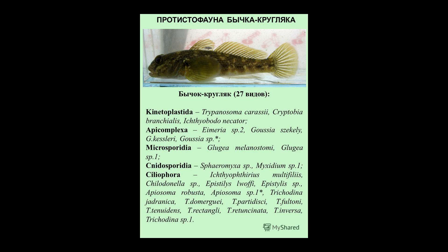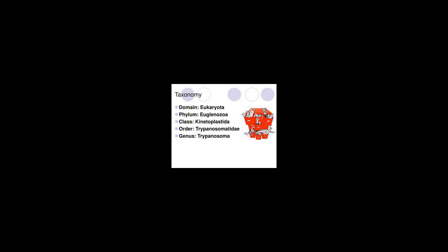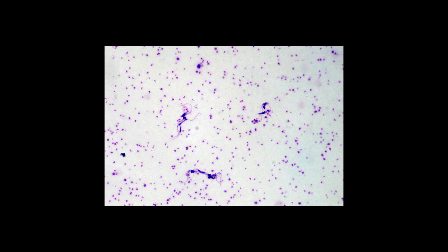Diseases caused by members of the order Trypanosomatida include sleeping sickness and Chagas disease, caused by species of Trypanosoma, and leishmaniasis, caused by species of Leishmania. Trypanosoma brucei can undergo meiosis as a likely part of a sexual cycle. Leishmania major is also capable of a meiotic process that is likely part of a sexual cycle.